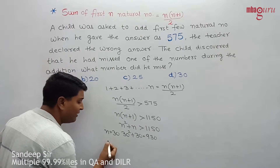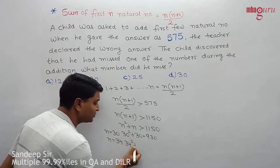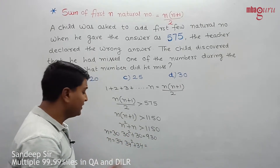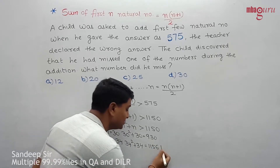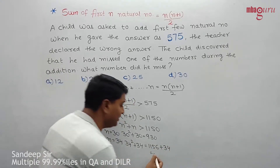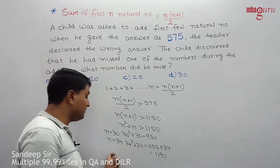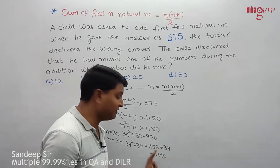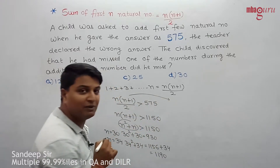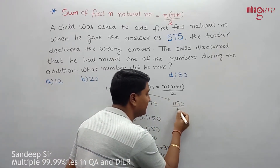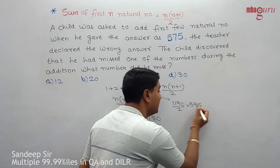Let's try n = 34. We get 34² + 34 = 1156 + 34 = 1190, which is greater than 1150. So n = 34 works. Now, n(n+1)/2 = 1190/2 = 595. So the correct sum of first 34 natural numbers is 595.